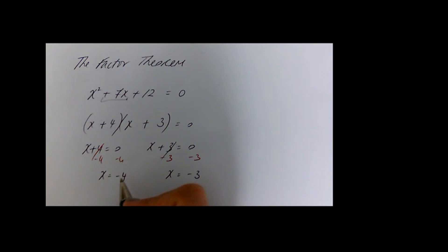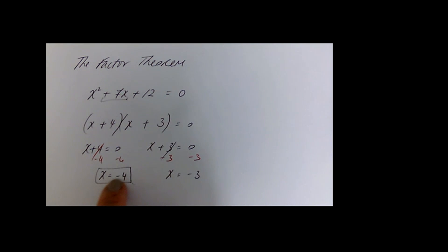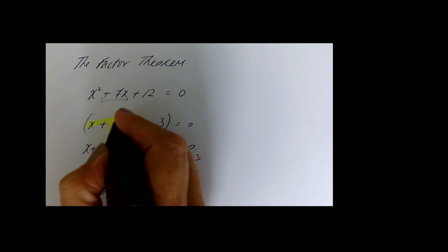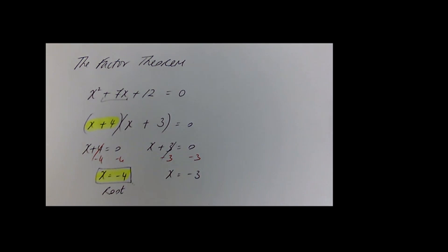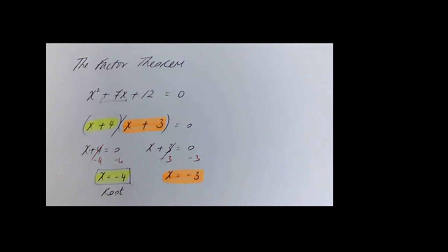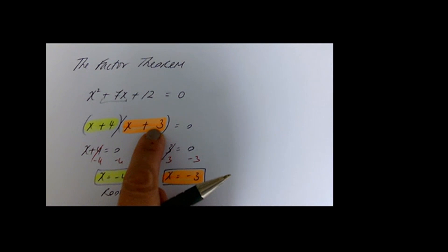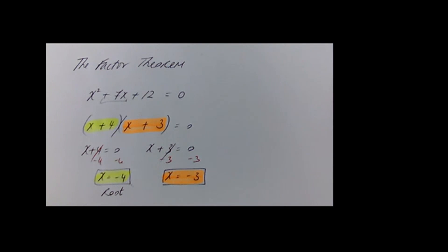Here are the connections: x equals minus 4 is a solution or a root — that's another word for a solution when your function equals 0, where it cuts the x-axis. When x equals minus 4, working backwards, x plus 4 is the factor. Likewise, x plus 3 as the factor means x equals minus 3 is the root. If you're told x equals minus 3 is a solution, then x plus 3 is the factor.